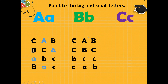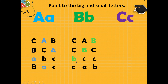Let's go to B. Where is letter B here? This one. Yes, it is big letter B. Where is the big letter B? Let's check. Yes, it is big B. Now we must find small b. Let's check. Yes, it is small b. Where is the small b here? Yes, it is small b. Good. Let's check.